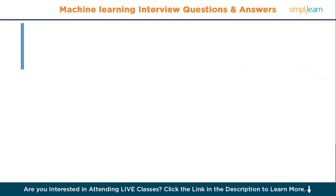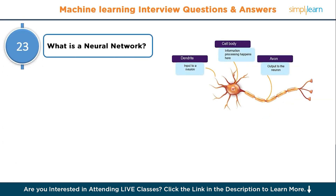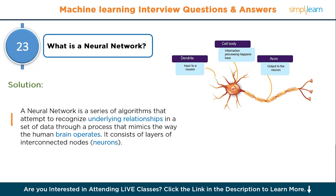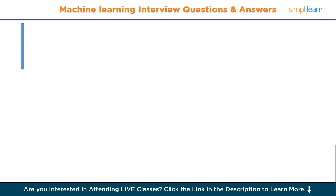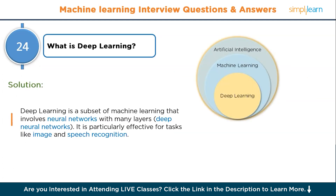Question number twenty-three: what is a neural network? A neural network is a series of algorithms that attempt to recognize underlying relationships in a set of data through a process that mimics the way the human brain operates. It consists of layers of interconnected nodes or neurons. Question number twenty-four: what is deep learning? Deep learning is a subset of machine learning that involves neural networks with many layers — that is, deep neural networks — and is particularly effective for tasks like image and speech recognition.